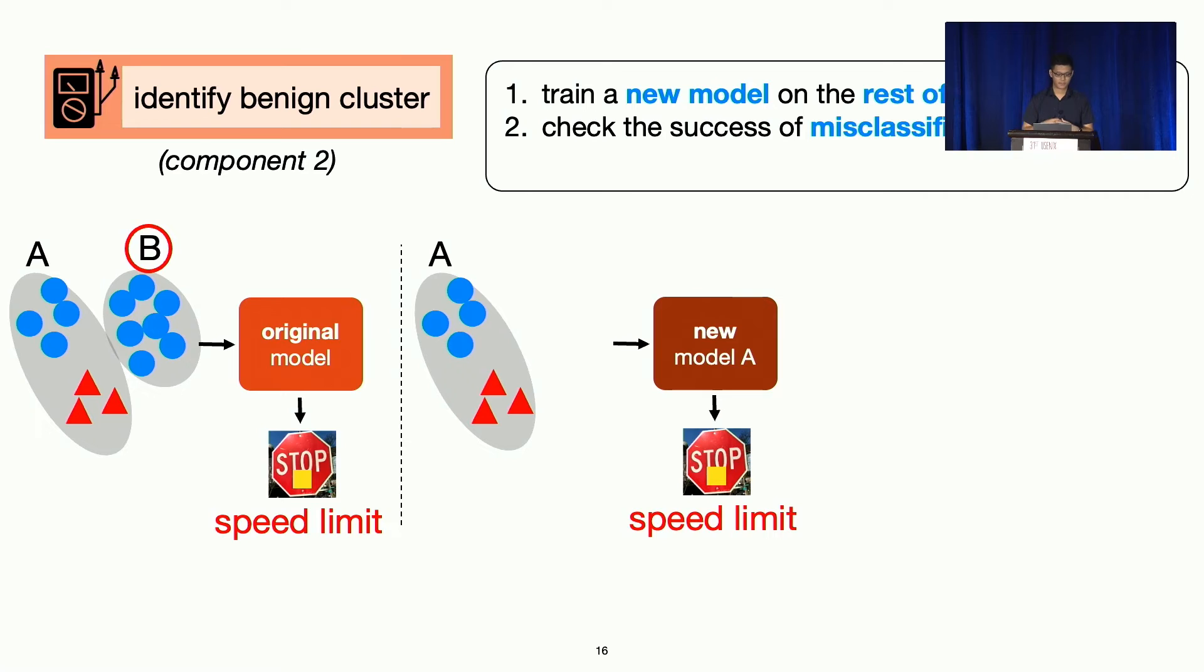And we're going to check to see whether the misclassification, the original attack, is still successful on this new model. We can do this because, again, this is forensics after attack. So we do have access to the original attack. We can replay it. And in this case, the attack is still successful. So we know that cluster B must be benign data because removing it does not decrease the success of attack.